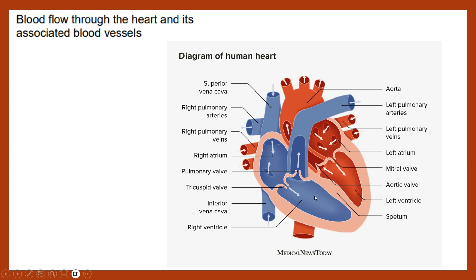They're going to pass through a set of valves to prevent backflow into the ventricles once the blood has entered their respective vessels. So from the right ventricle through the first of the semilunar valves — the pulmonary valve — because it's going into the pulmonary artery.